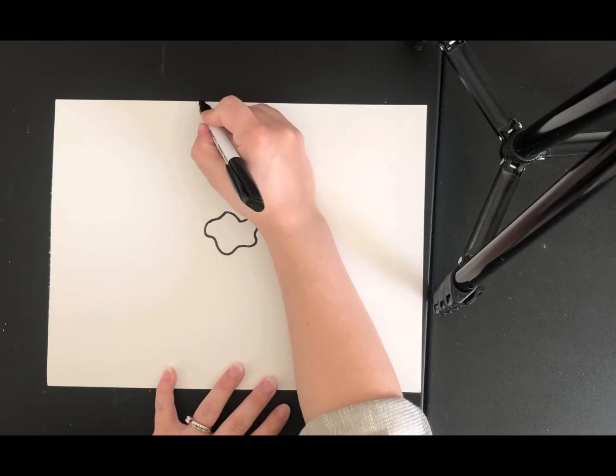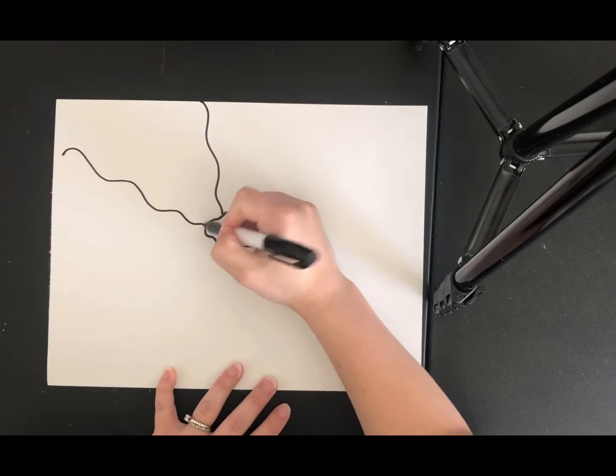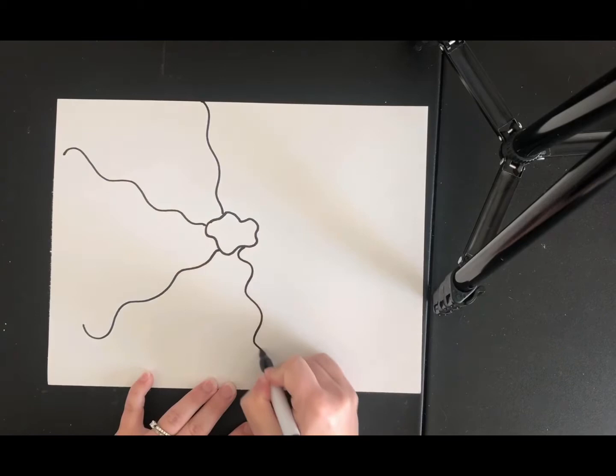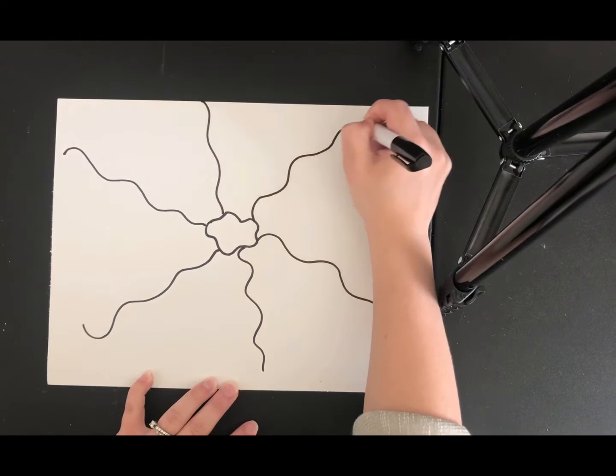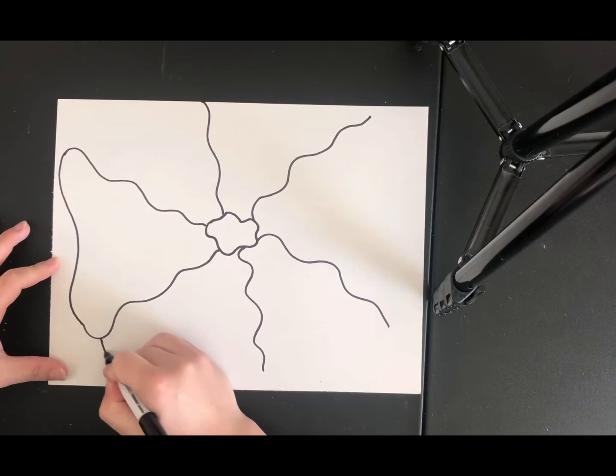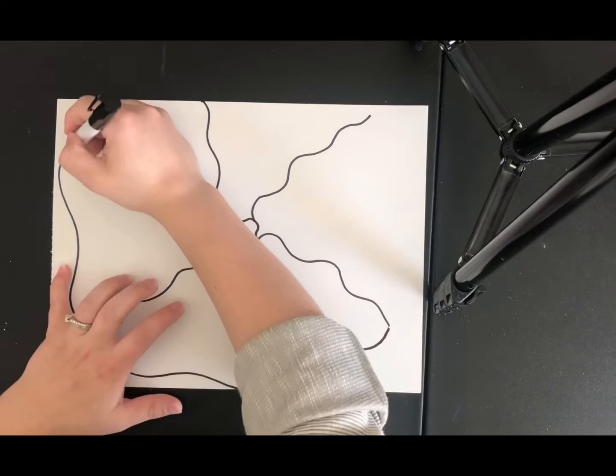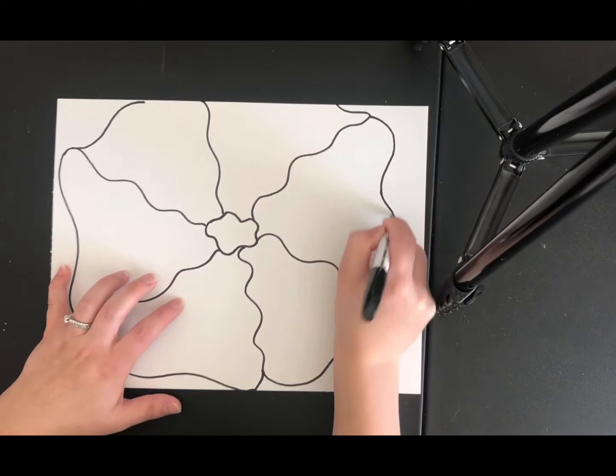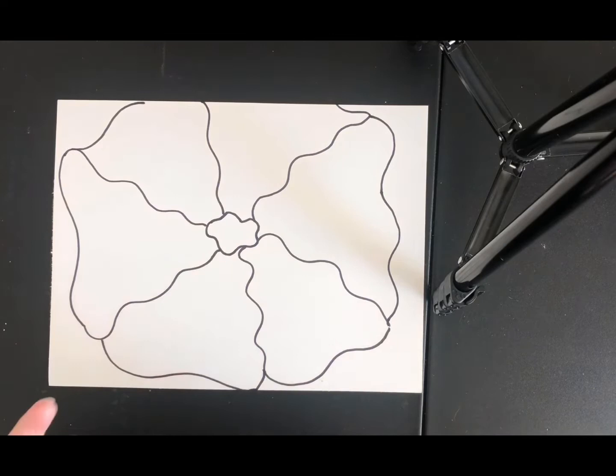Then using some wiggly lines I'm gonna bring those lines towards my blob and they can wiggle because that's what's gonna make my flower look unique. And then at the end of these lines, notice I left some room. I want to go ahead and connect them to create my flower petals. This is just one way to do it. You don't have to do it this way. There are many ways to create a flower.